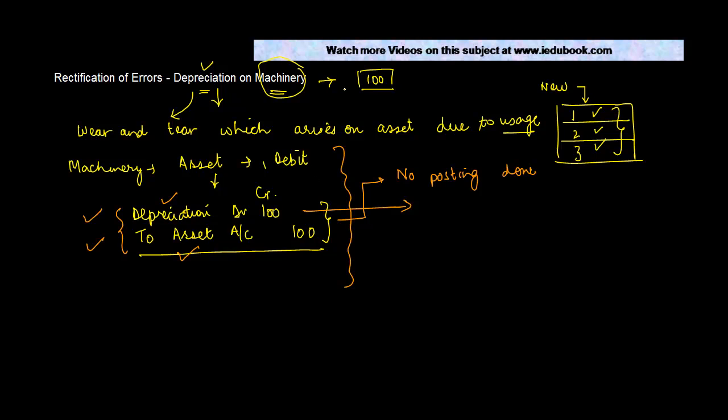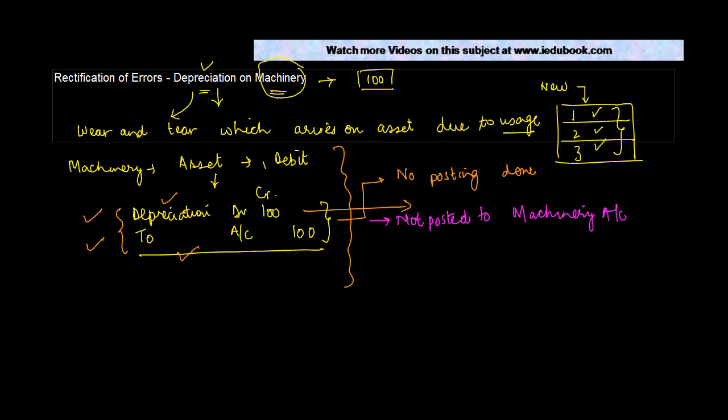I use the word asset here but you can very well use the word machinery. Now in this case what would have happened - you posted the depreciation part correctly, but you did not work on the machinery part. So now you need to do this posting.